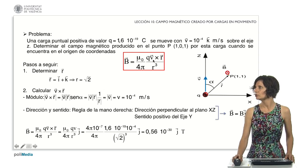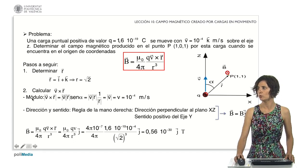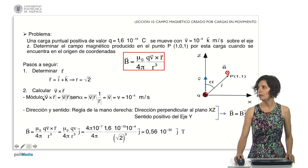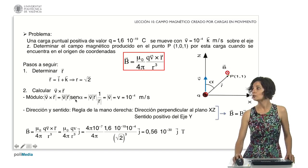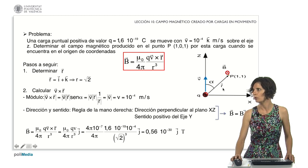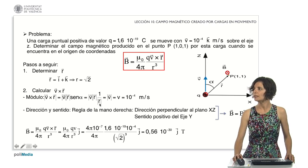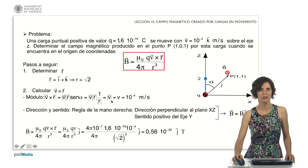Next, we will calculate the vector product between the velocity vector and the position vector. First, we'll calculate its magnitude, and then its direction and sense. We know that the magnitude of this vector product equals the product of their magnitudes times the sine of the angle they form. If we refer to the graph, we observe that the directions of V and R create a right triangle, where the sine of alpha represents the side opposite the angle, with a length of 1, divided by the hypotenuse, with a length equal to the magnitude of R. Substituting, we realize that the magnitudes of R cancel out, leaving the magnitude of the vector product equal to the magnitude of the velocity, which is 10 to the power of minus 4 meters per second.